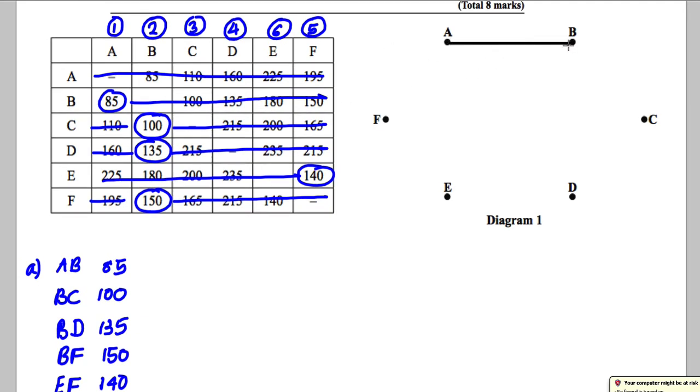AB is in it. BC is in it. BD is in it. BF is in it. And EF is in it. Now there is a problem here. You must write the weights on. If you don't write the weights on you run a risk of losing a mark here. So AB was 85. BC was 100. BD was 135. BF was 150. So BF here is 150. And EF is 140.